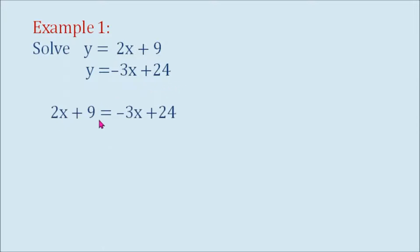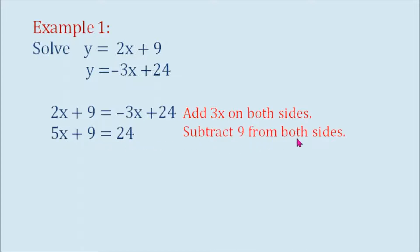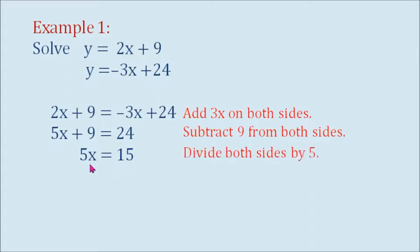So we have 2x plus 9 equals negative 3x plus 24. First step, we add 3x on both sides, so we have 5x plus 9 equals 24. Then subtract 9 from both sides — we have 5x equals 15. Then divide both sides by 5: x equals 3.